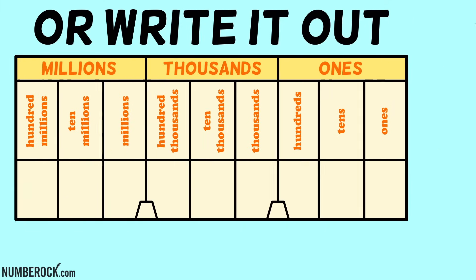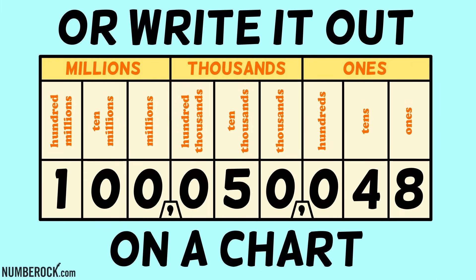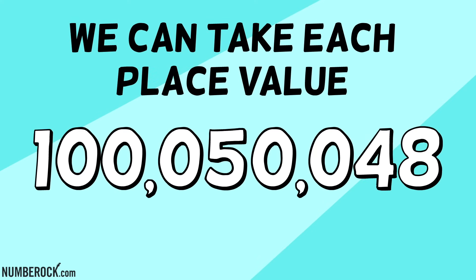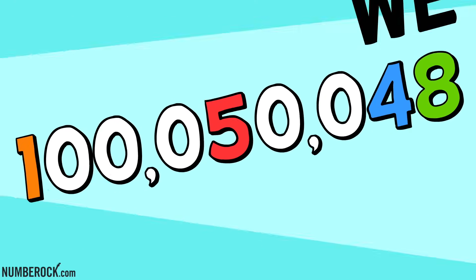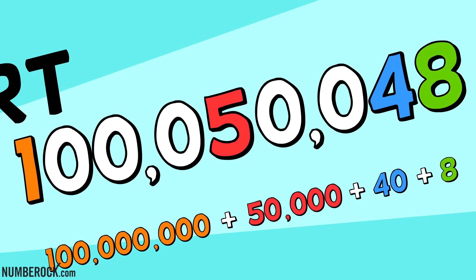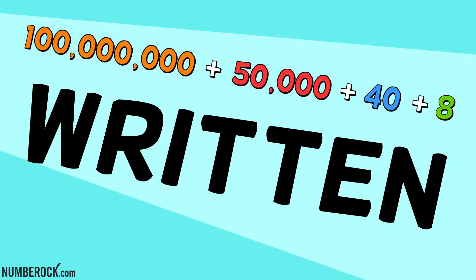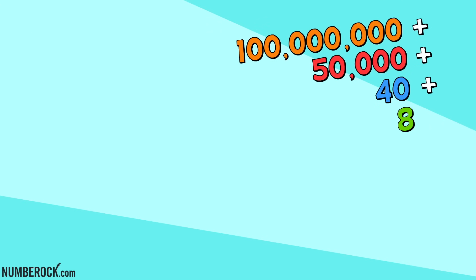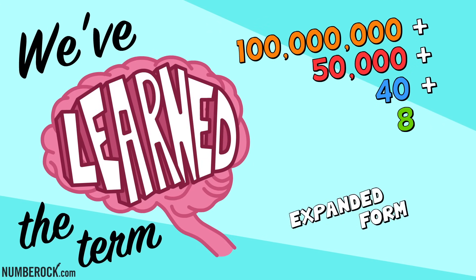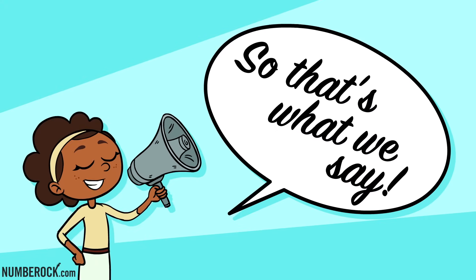Now check it out. We can say a number's name or write it out on a chart. We can take each place value and then we can break it apart. When we want to define numbers written in this way, we've learned the expanded form, so that's what we say.